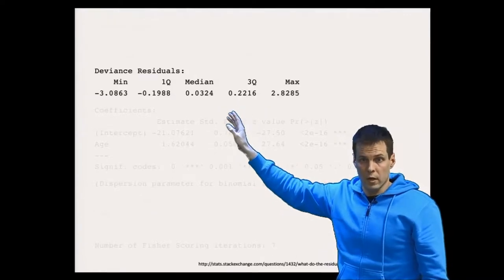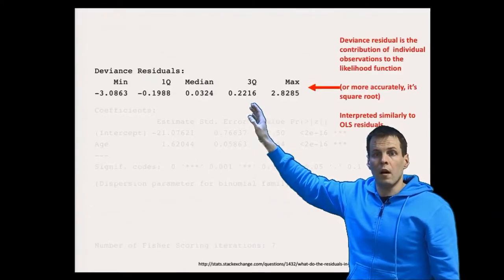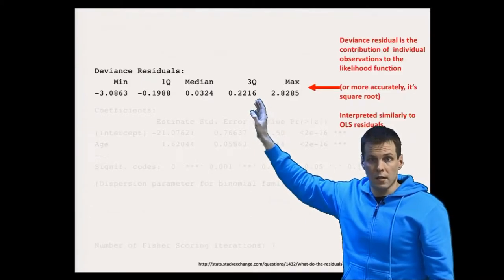If the model is correctly specified, so the distribution is correct and the linear prediction is correct, they are normally distributed in large samples.